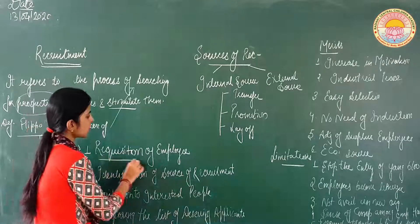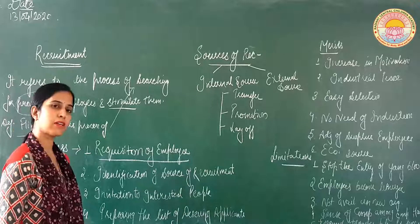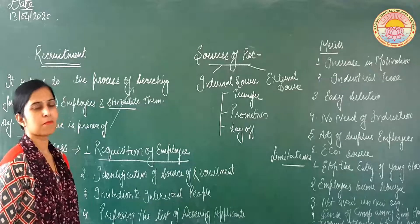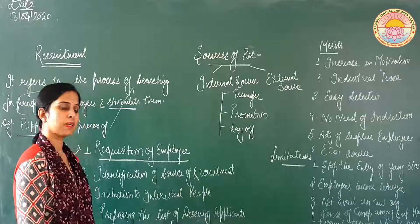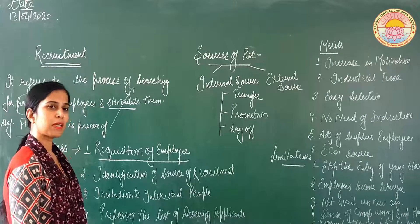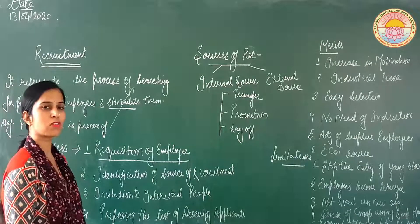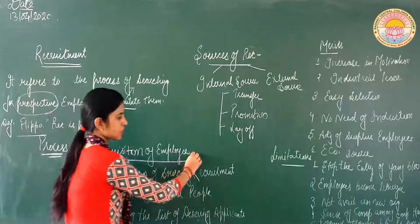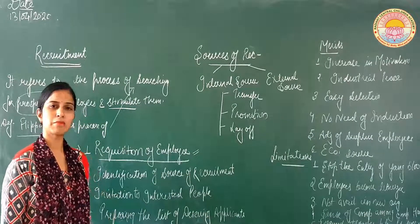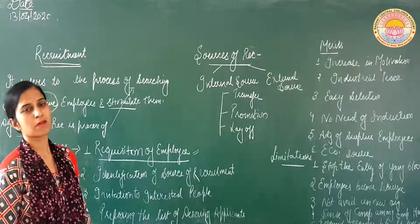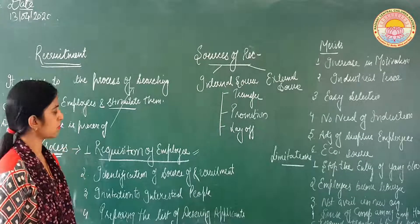Toh sabse pahela hai requisition of employee. Sabse first hamare recruitment ka process wohi se start hota hai ki hamein organization mein kitne number of employees ki need hai. Yahaan par jitne bhi departmental managers hain, unke department mein jitne employees ki need hai, woh apne employees ki requirement personal manager ko — that means human resource manager ko — dete hain. Toh hamara sabse first step yahi hai: har department mein kitne employees ki zarurat hai, aur usko personal manager ke notice mein lana.